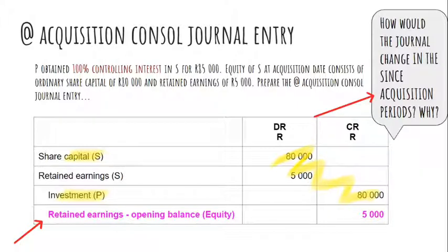In all subsequent periods when you do this at acquisition elimination journal entry, your gain from bargain purchase has now moved to the retained earnings opening balance of the group. It's like any other profit and loss item — in the year of the profit or loss it's recognized through profit and loss, but it closes off to retained earnings. So in subsequent periods it moves to your opening retained earnings.